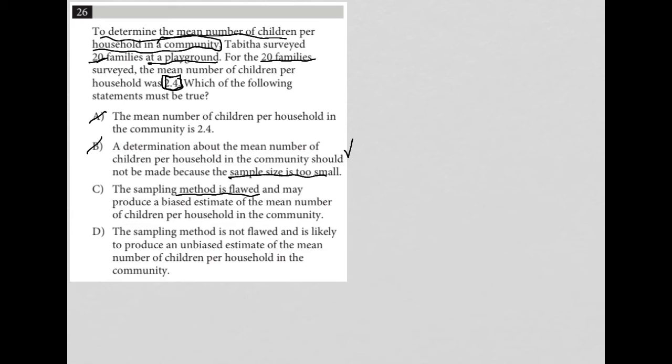So choice D says the sampling method is not flawed and is likely to produce an unbiased estimate of the mean number of children per household in the community. Well, that can't be true because if that were true, then also choice A would be true, right? So D is gone. We know that the method is, in fact, flawed just because of location even. So choice C ends up being the best answer out of the bunch here.